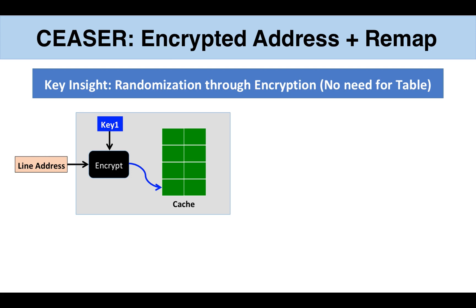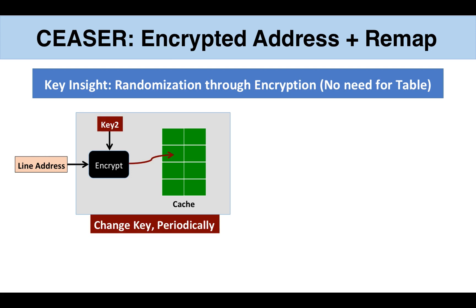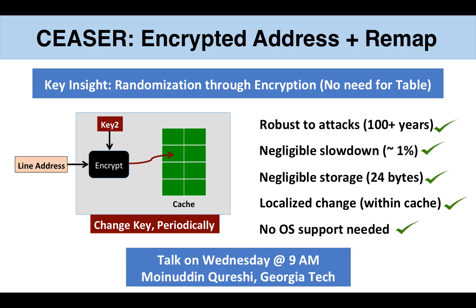Given enough time, an attacker can still use a timing attack to figure out the lines that map to the same set. To avoid this, our solution periodically changes the keys of the encryptor, which changes the line-to-cache mapping. Our solution can tolerate years of attack, has negligible slowdown and storage overhead, and does not require OS support.